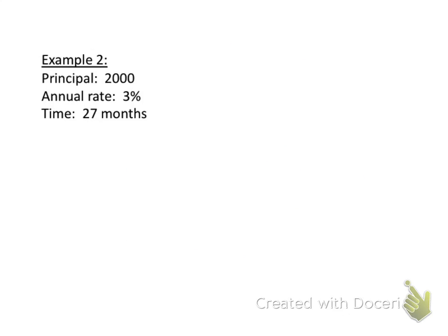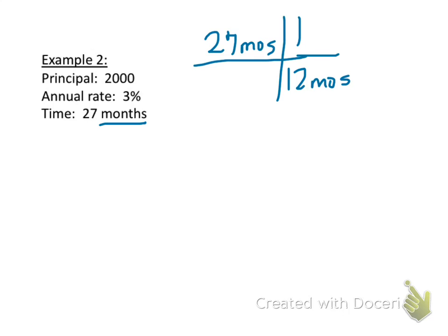Let's try another one. In this example, we're taking $2,000 deposited at an annual rate of 3% for 27 months. It's really important that we convert our time to years. We have to decide how many years 27 months is. There are 12 months in one year, so dividing 27 by 12 — the months cancel out — gives us 2.25. So 27 months equals 2.25 years.